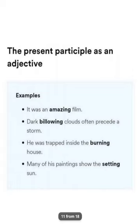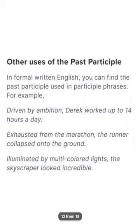'He whispered, thinking his brother was still asleep' — present participle as reason. 'It was an amazing feeling' — 'amazing' is present participle acting as an adjective describing the feeling. 'Dark billowing clouds often precede a storm.' 'He was trapped inside the burning house' — 'burning' describes the type of house. 'Many of her paintings show the setting sun' — 'setting' is a participle acting as adjective.